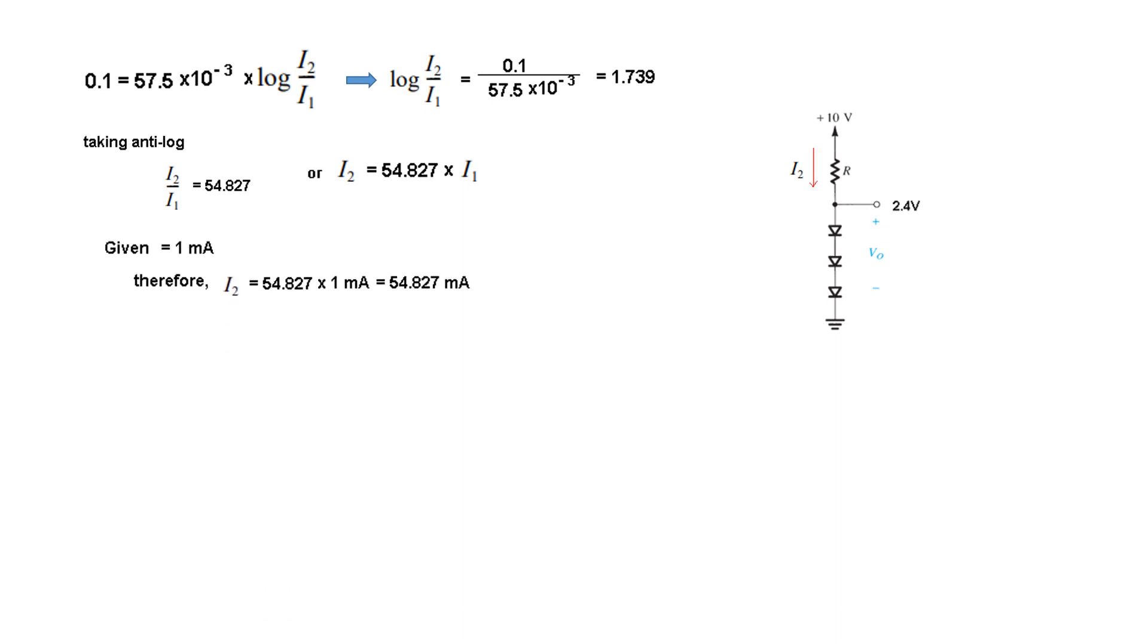Looking at the voltage across R, it is 10 minus 2.4. R is V over I, so R equals (10 minus 2.4) divided by 57.824 milliamperes.